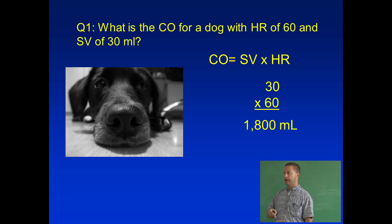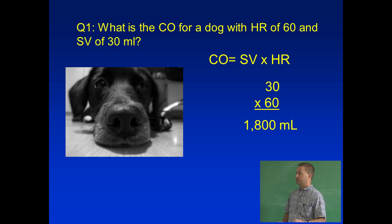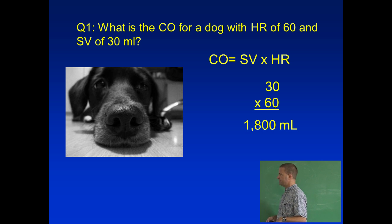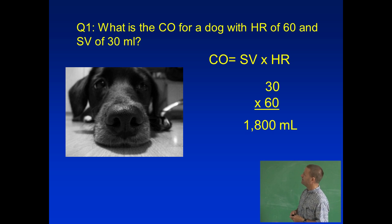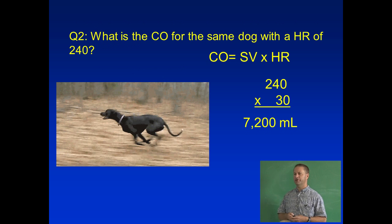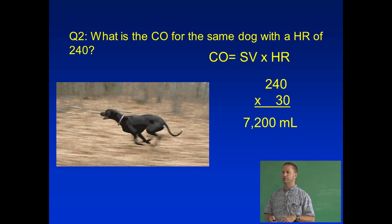When this dog begins to exercise, his heart rate is going to go up and cardiac output will go up as well, since cardiac output is just stroke volume times heart rate. Imagine the same dog running flat out with a heart rate of 240. How do I figure that out? 240 times 30 — what does that come out to be? 7,200 milliliters.